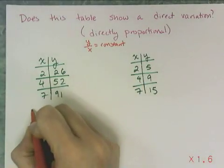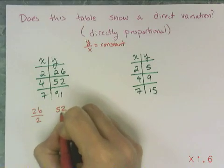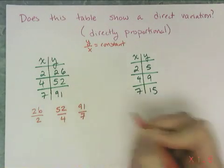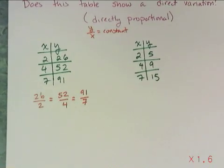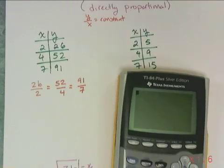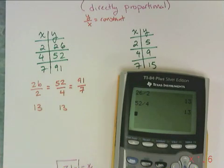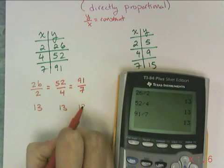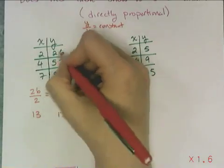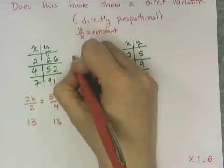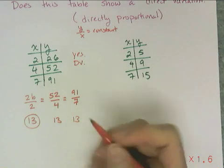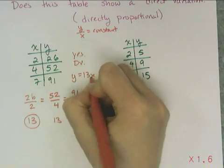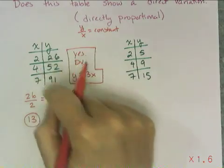For this table, I take the y value and divide it by the x value for each of the four points. If I take 26 divided by 2, I get 13. If I take 52 divided by 4, I get 13. And 91 divided by 7 also gives 13. That means this table is indeed directly proportional — the y values are directly proportional to the x values, so this is a direct variation. The equation that generates this table is y equals 13x.